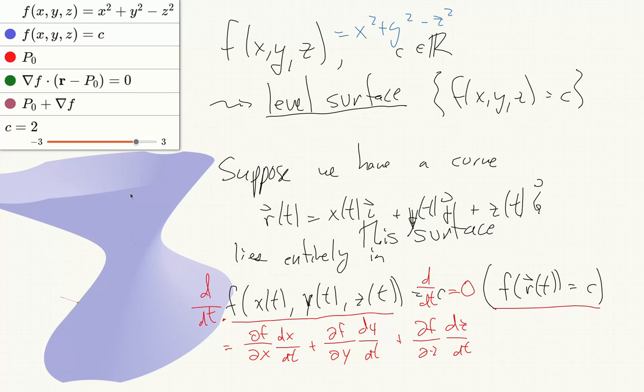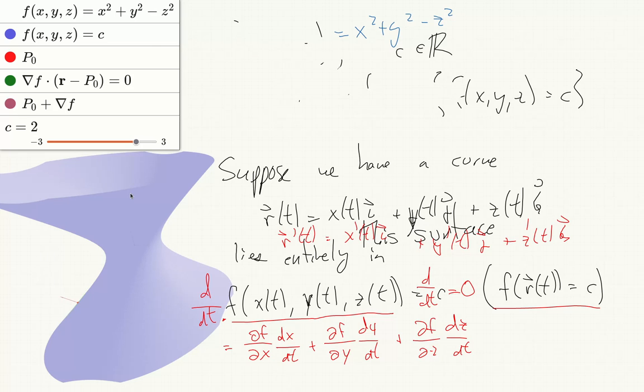Now remember how we defined derivatives of vector functions. r prime of t will be x prime of t i, plus y prime of t j, plus z prime of t k. So this equation we have at the bottom, this whole expression is del f at r(t) dot r prime of t.